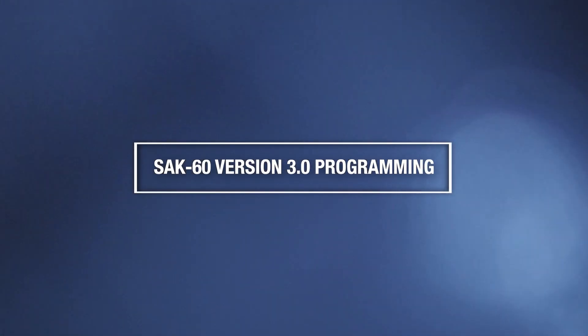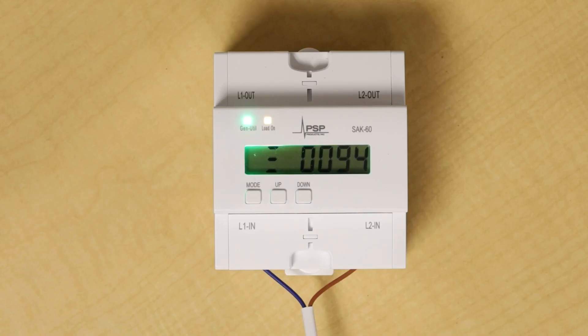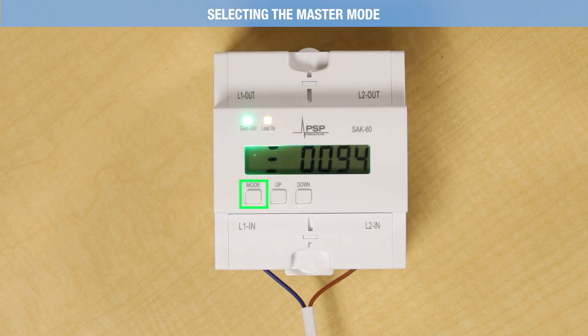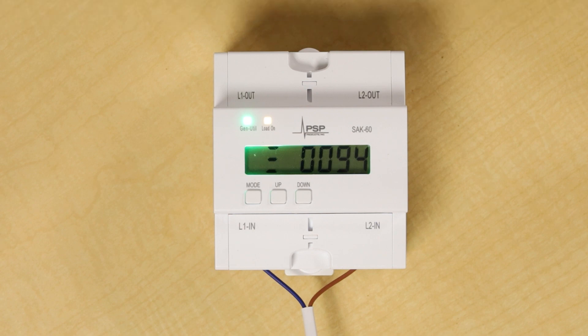To program the SAK60 version 3, you must first select the master mode that corresponds to your application. Hold the mode button for about 3 seconds until two digits appear on the display. Then press the mode button briefly to scroll to the correct master mode, then hold the mode button again for about 3 seconds to enter the programming mode. After you've adjusted the settings, leave the SAK60 alone for about 7 seconds, and it will save the changes and reload the programming with the new values.